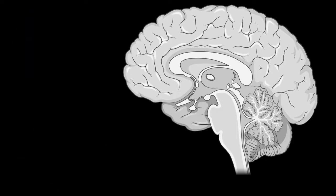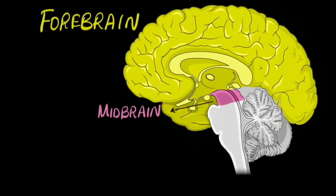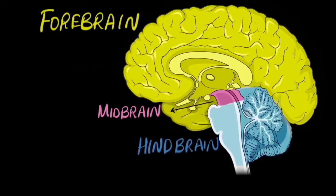Let's look at the different parts. We can broadly divide our brain into three parts: the forebrain, which is this big yellow section; the midbrain, which is this tiny pink section; and the hindbrain, or the lower brain, which is this blue section.